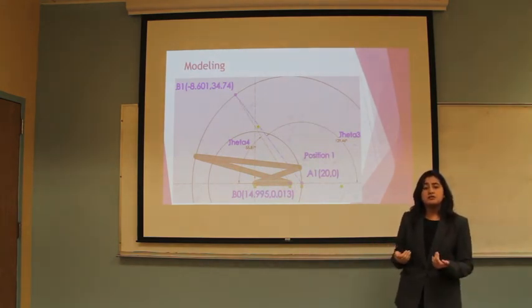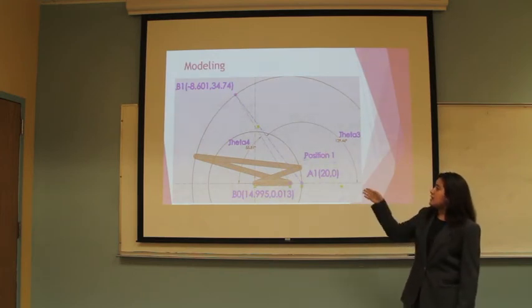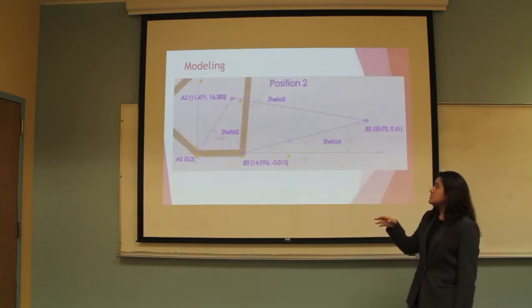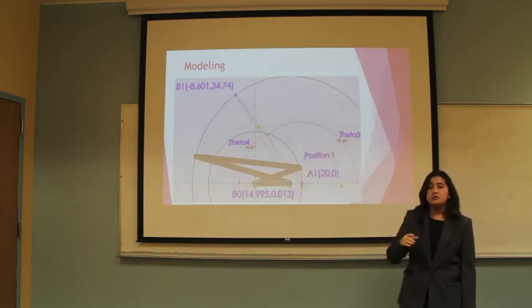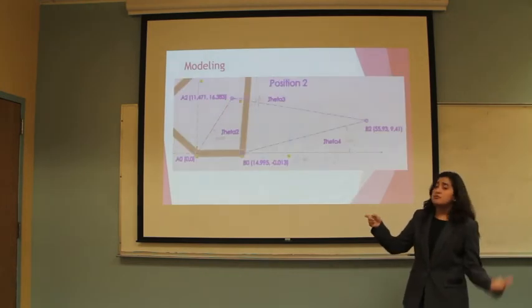First we had to model this to make sure that it matched all three positions. Using position 1, we found that we had a crooked or twisted mechanism as shown here. This mechanism did not follow all the other positions as depicted here for position 2 and for position 3.